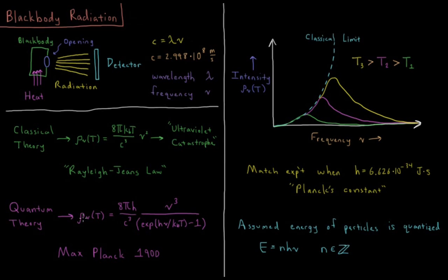When he did that, he got that the density of the radiation at a given temperature was 8π times this constant h over speed of light cubed times the frequency cubed, divided by the exponential of this constant h times the frequency over Boltzmann constant times temperature, minus one.